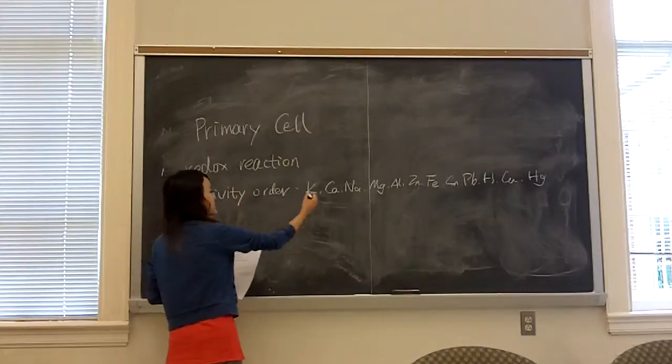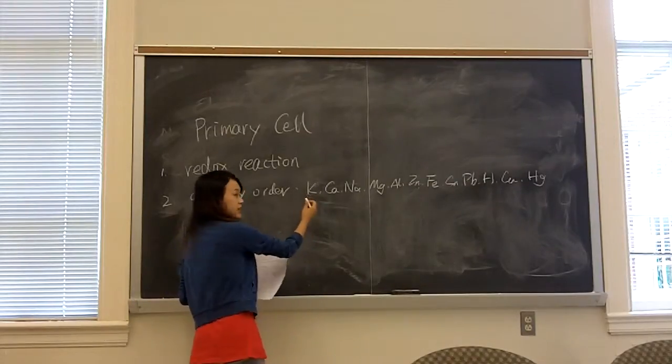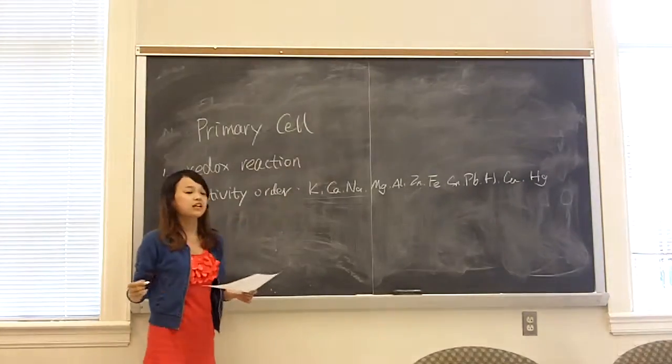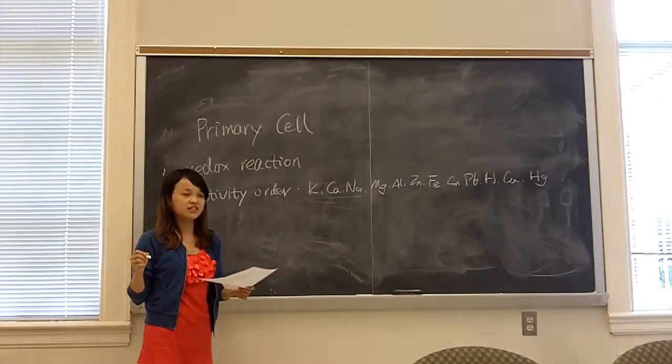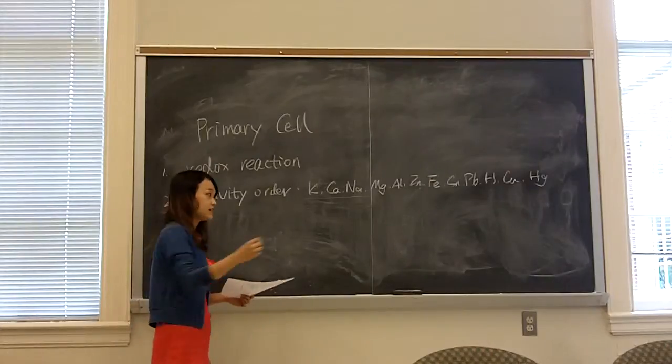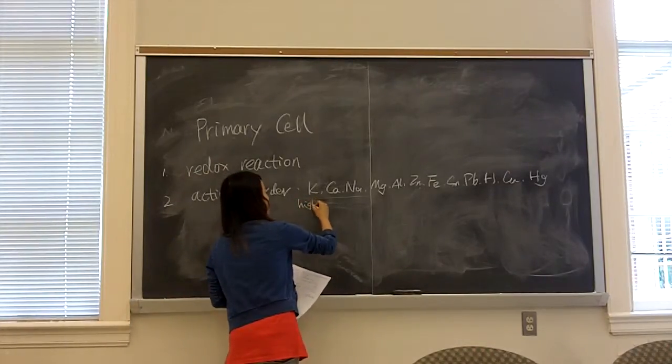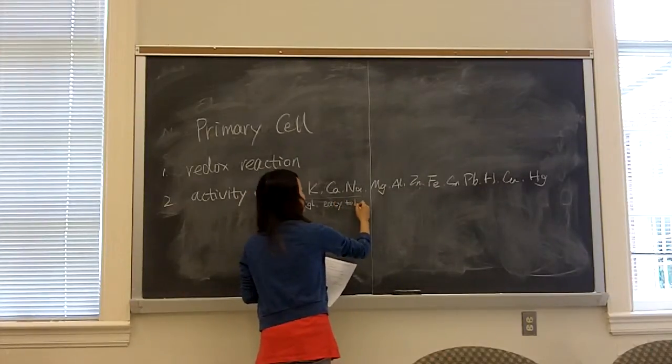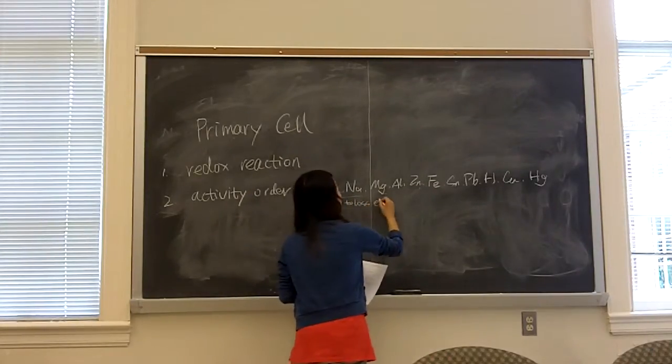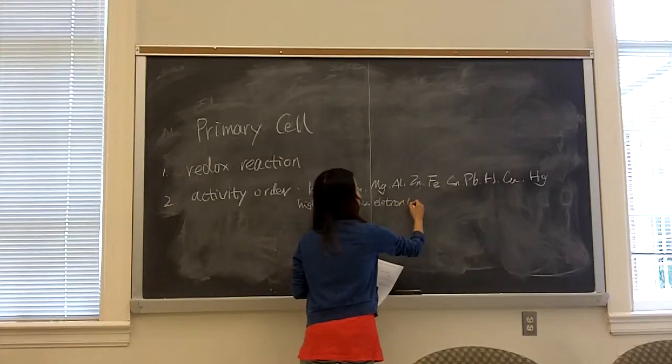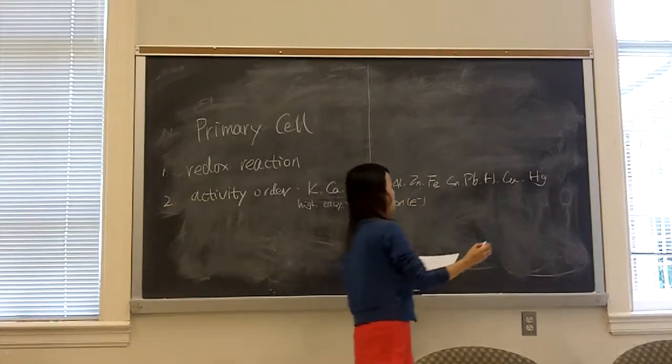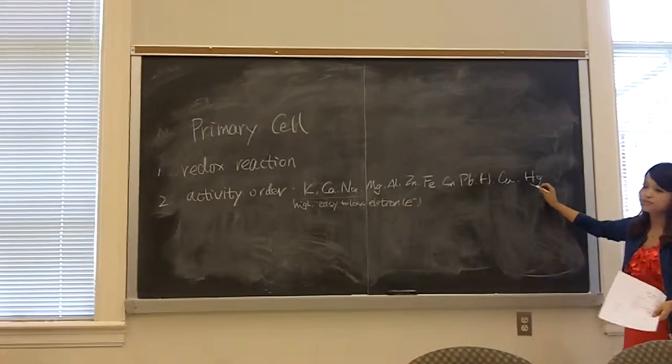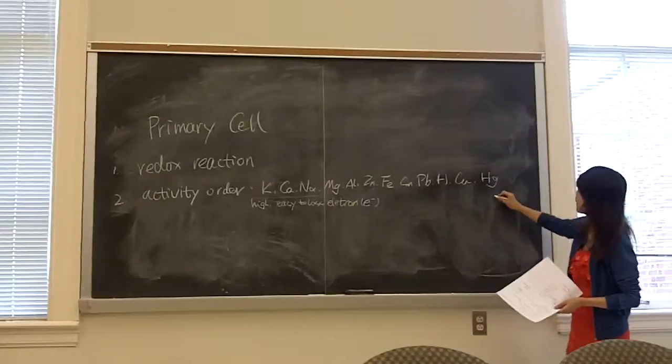And the metals here have the higher activity which means the metal here can lose its electron much more easier. The metals here are much more inertial which means they are not likely to lose their electron.